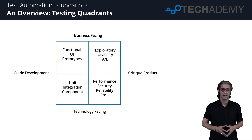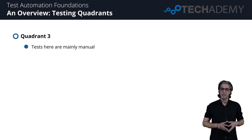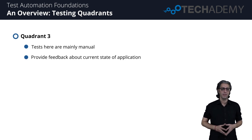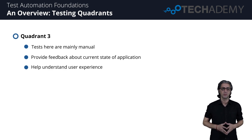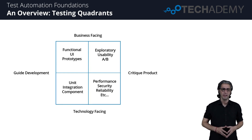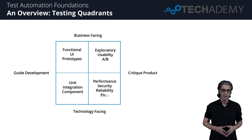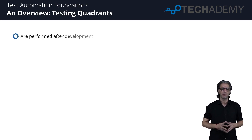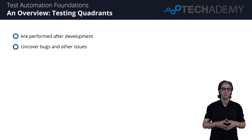Moving to Quadrant Three in the top right, this includes business-facing tests that critique the product. This quadrant includes mainly manual tests but can benefit from automation as well. Tests here provide feedback about the current state of an application and whether things are working as expected. They are user-oriented and help understand the user's experience. Quadrant Three involves critical thinking and in-depth observation of the application's workflows. Instances include exploratory, usability, and A/B testing.